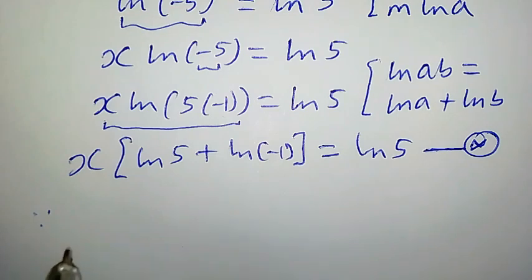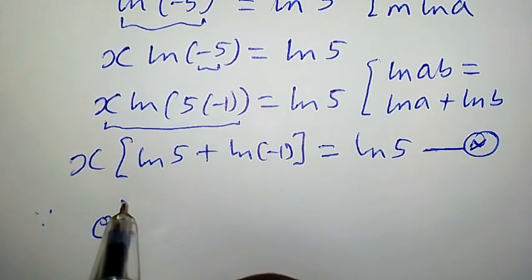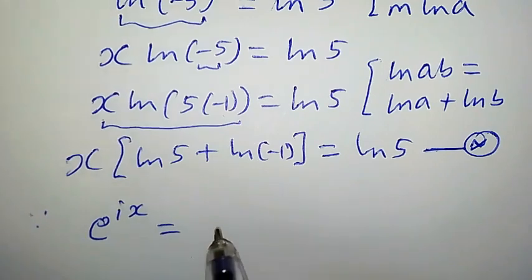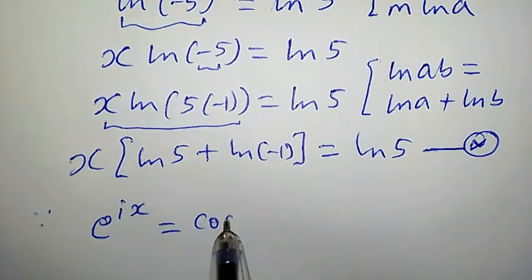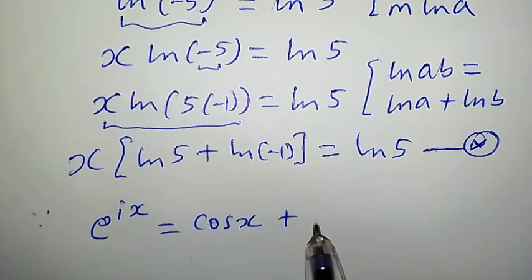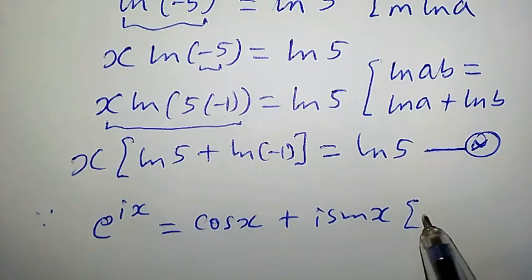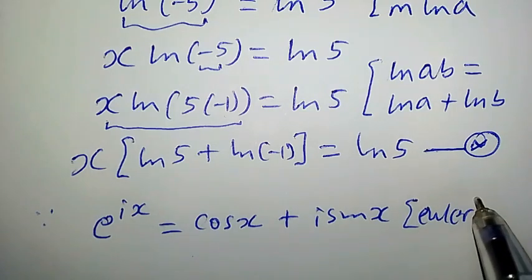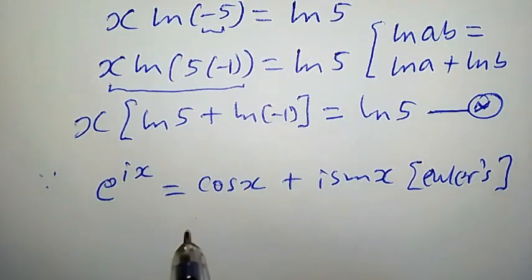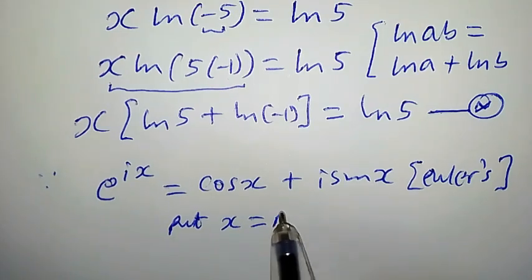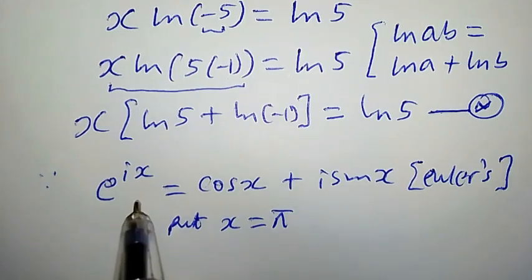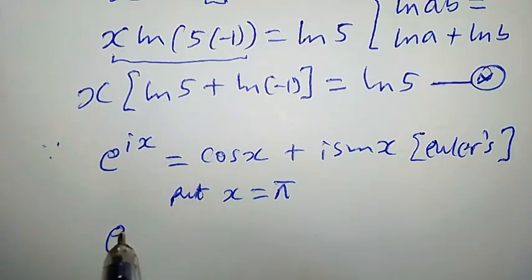Recall Euler's formula, which is used in trigonometry: e^(ix) = cos(x) + i·sin(x). This is Euler's formula.